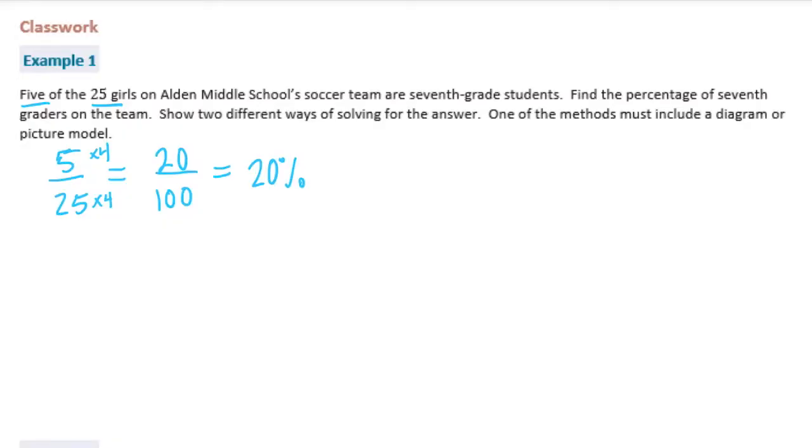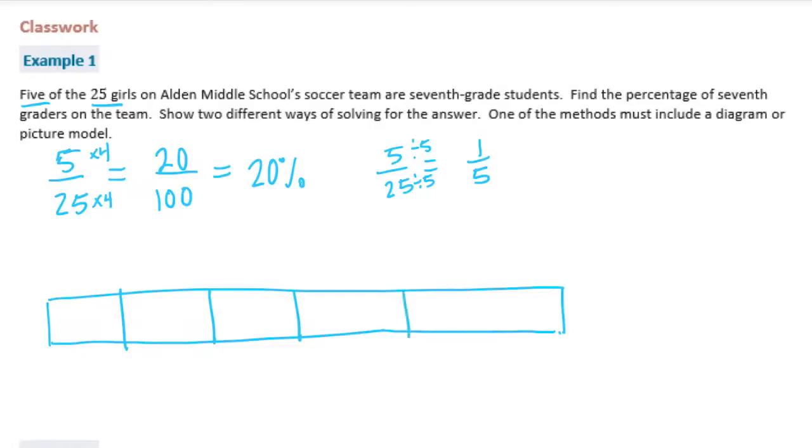Now, what I'm going to do is I'm going to use a model tape diagram. So 5 25ths is equal to, if I were to reduce that, I can divide both of them by 5. So I get 1 5th. So I'm going to break this into 5 equal pieces. I just used this to figure out how many pieces to break it into. So we have the percent, and then we have the girls. So I'm going to start with 0%, 0 girls, and then break it. And then at the end, we're going to have 100% and 25 girls.